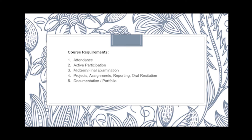For the course requirements, in order for you to pass this course, you have to comply with these five requirements. Number one, Attendance — you will be given an Attendance Sheet or Attendance Form and have to fill it out every meeting. Number two, Active Participation. We will have once a week Oral Recitation every after the discussion of the topic, and that's graded.